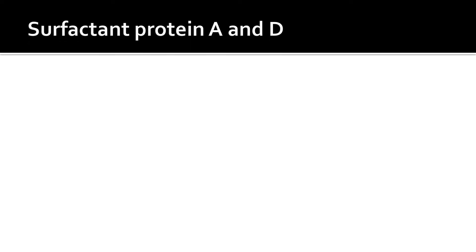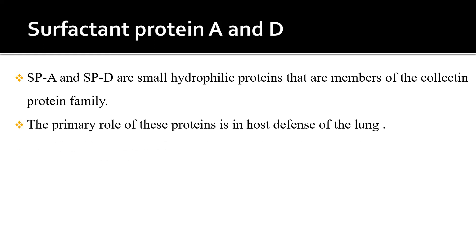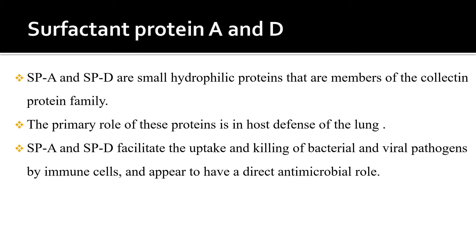Surfactant proteins A and D are small hydrophilic proteins that are members of the collectin protein family. The primary role of these proteins is in the host defense of the lung. They facilitate the uptake and killing of bacterial and viral pathogens by immune cells and appear to have a direct microbial role.